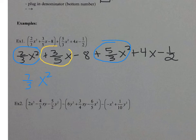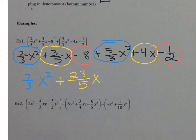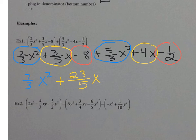Next we have positive 3 fifths x plus 4x. Hit the fraction button — Alpha Y equals number 1, type in 3 fifths, then plus 4 and hit enter. It gives you the answer as a fraction: positive 23 over 5x. Then the last will be negative 8 minus 1 half. Type in negative 8 — remember, use the negative button which is right below the 3, not the minus key. Then minus, then Alpha Y equals, type in 1 over 2, hit enter. And you get negative 17 halves, so it's minus 17 over 2.